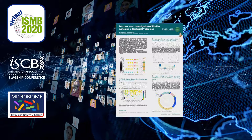So what are fimbrial adhesins? Fimbrial adhesins are one class of adhesive proteins by which bacteria can mediate attachment to the host cell. The name fimbrial adhesins is based on their fibrillar structure, which in turn is based on their characteristic stalk. This stalk is composed of repeating protein domains called stalk domains, which fold to build an elongated structure.